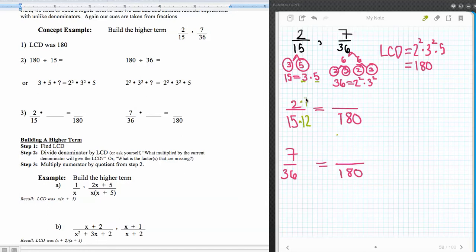And so this would also be times twelve. And that would make my new term, my higher term, twelve times two, which is twenty-four one hundred and eightieths.